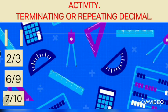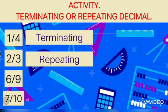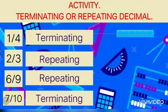Activity: determine if the following is a terminating or repeating decimal. 1 over 4 — this is a terminating decimal. 2 over 3 — this is a repeating decimal. 6 over 9 — this is also a repeating decimal. 7 over 10 — this is a terminating decimal.